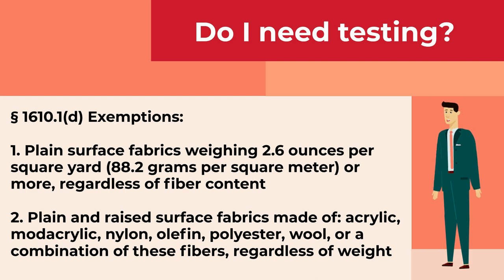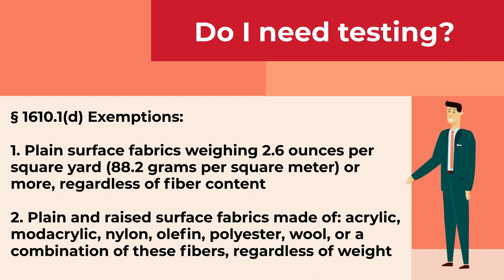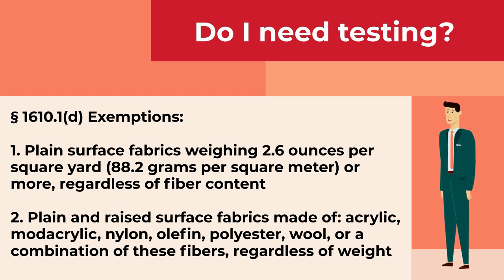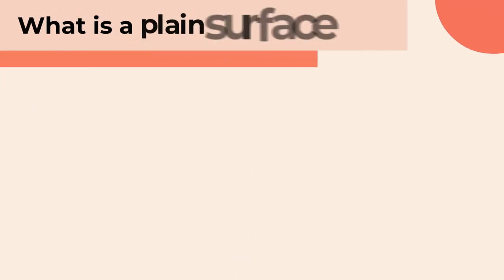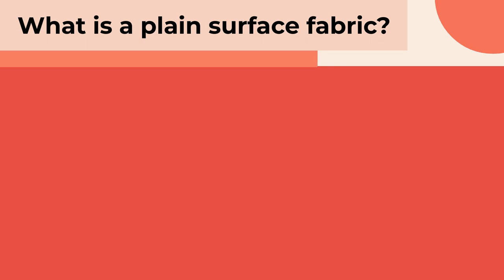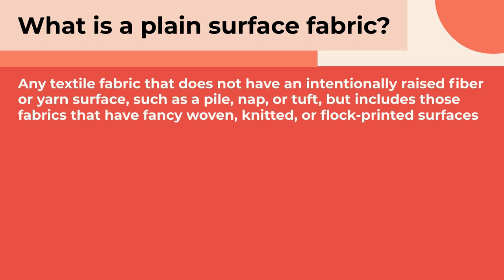To help determine whether your fabrics meet a specific exemption, you should identify the fabric type, weight, and specifications, including whether the fabric is plain surface or raised surface. A plain surface fabric is any textile fabric that does not have an intentionally raised fiber or yarn surface, such as pile, nap, or tuft.